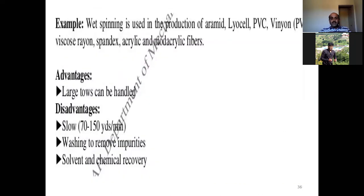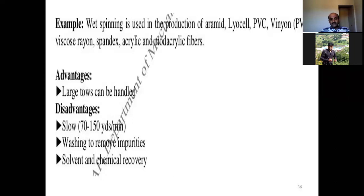Wet spinning can be used in the production of aramid, lyocell, PVC, vinyon, PVA, viscose rayon, spandex, acrylic, and modacrylic fibers. The main advantage is that larger tows can be handled. The major disadvantage is that the process is very slow — around 70 to 150 yards per minute. Washing to remove impurities may also require solvent and chemical recovery.